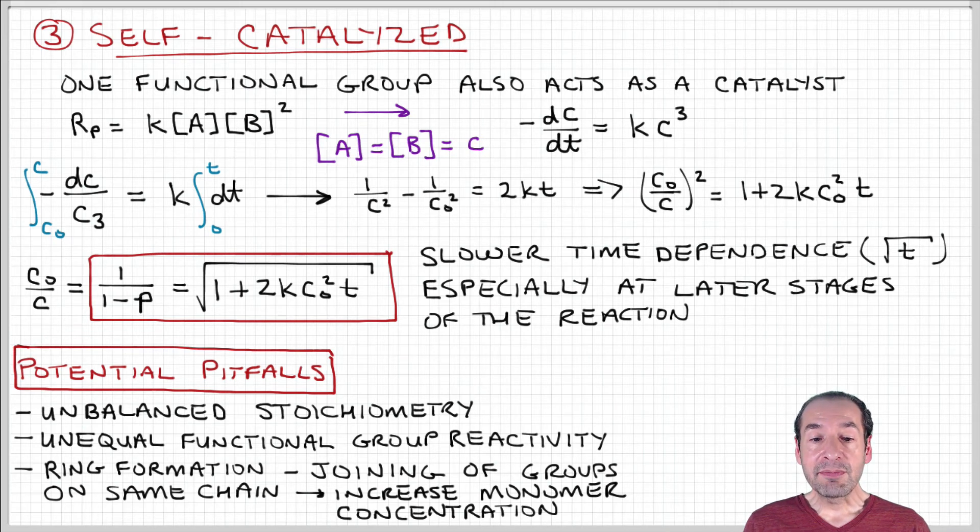If there's imbalances in the stoichiometry, different reactivities of functional groups, if they're not exactly the same, they have different rate constants. Those are things that can cause deviations from these basic behaviors.